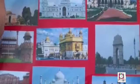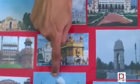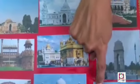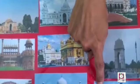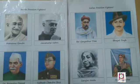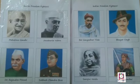Hawa Mahal in Jaipur, Taj Mahal in Agra, Charminar in Hyderabad. There are many national leaders who fought for the independence of our country.